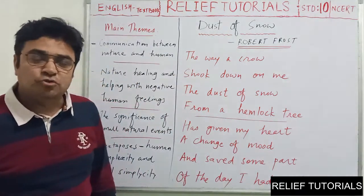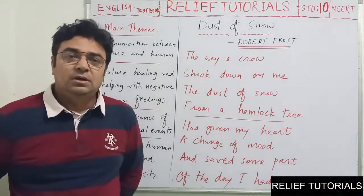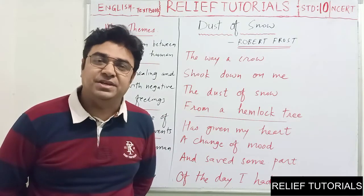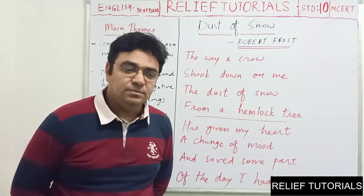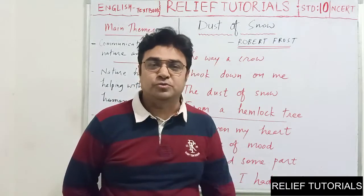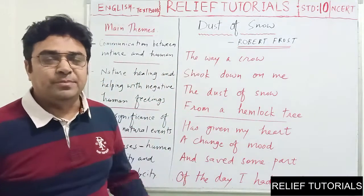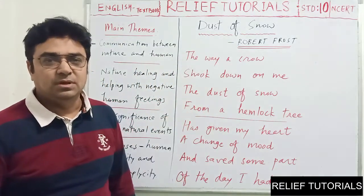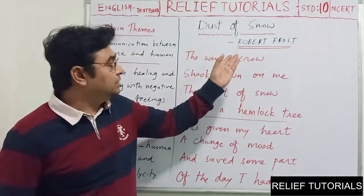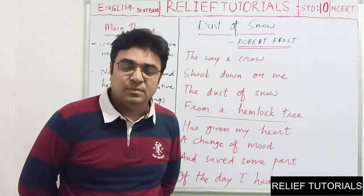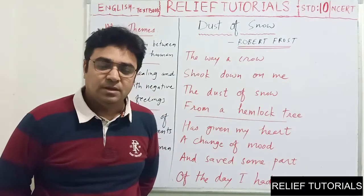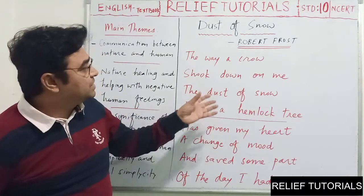Hi friends, my name is Pranav Shukla, welcome to Relief Tutorials. Today we are going through the English textbook of standard 10 NCERT, and we are taking poetry for consideration. We are going to the first poem, which is 'Dust of Snow.' The poem is very simple and very small — it might hardly take 15 seconds to read. The poet is Robert Frost.